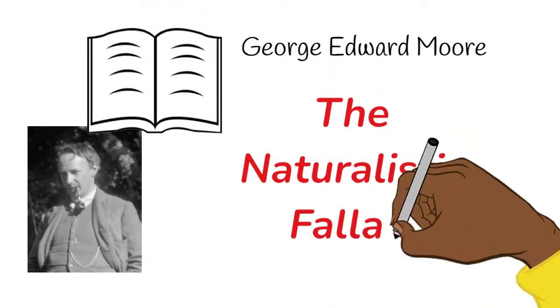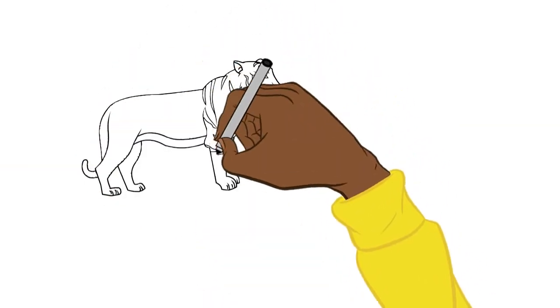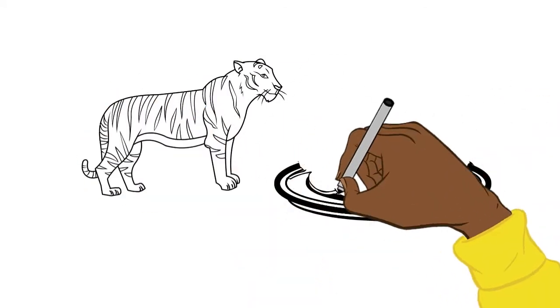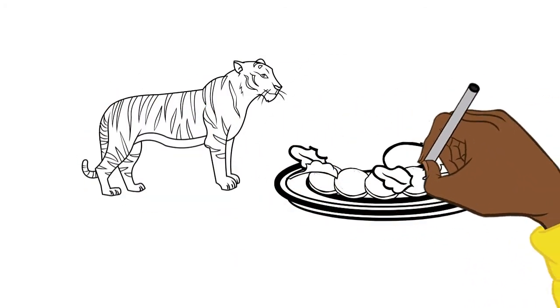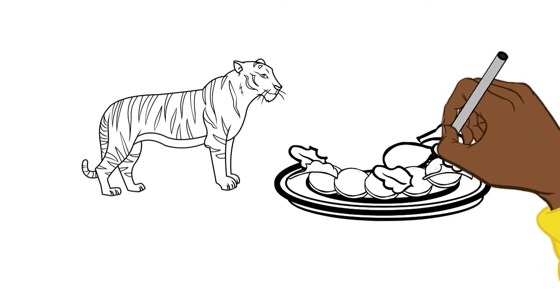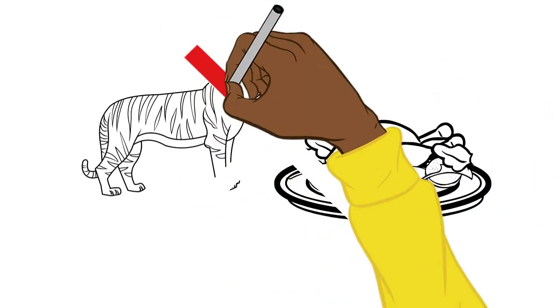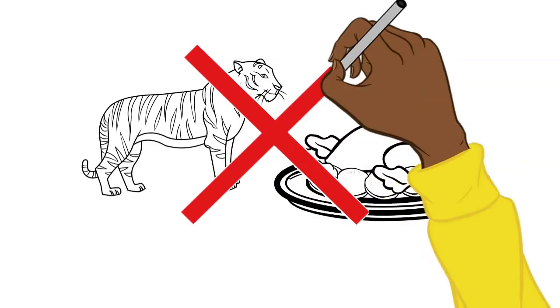Moore claimed that it is a mistake to define what we observe as always good. For example, just because we can see with evidence that tigers eat meat, that does not mean vegetarians are wrong and that eating meat is always a moral thing to do.